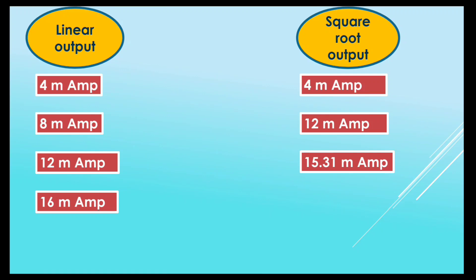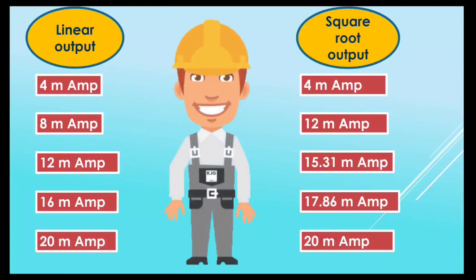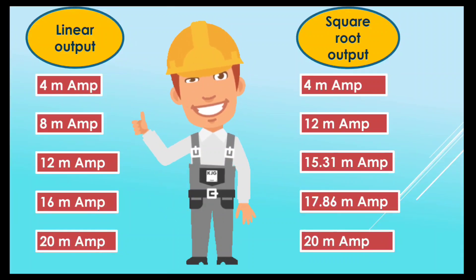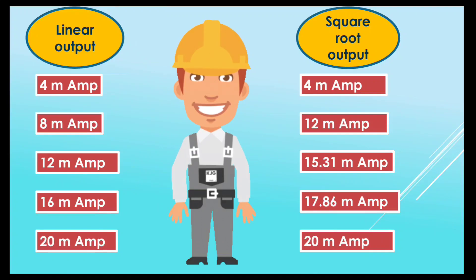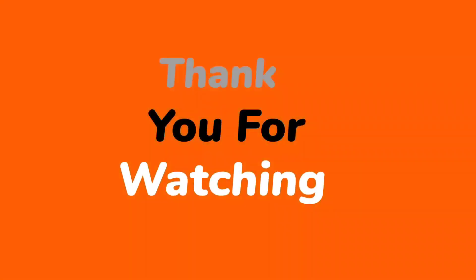According to linear output, the table of square root output will be like this: at 4 mA linear output, 4 mA square root output; at 8 mA, 12 mA; at 12 mA, 15.31 mA; at 16 mA, 17.86 mA; and at 20 mA, 20 mA. So we get 4 mA at 4 mA and 20 mA at 20 mA — the rest of the values will be changed. That was our video.